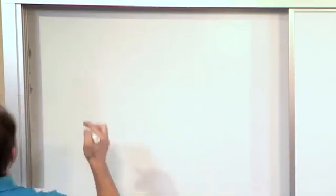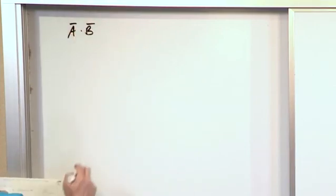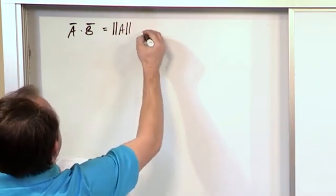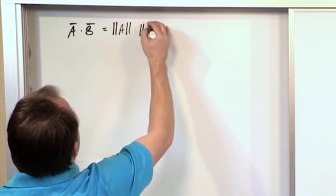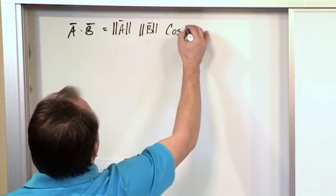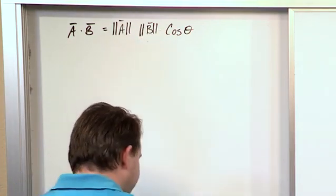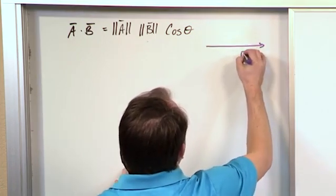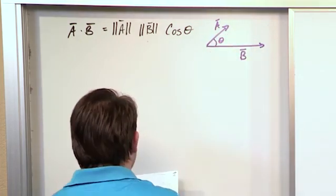The first thing I want to do is recall that the vector A when we dot it into the vector B, you can write it a couple of different ways, but one way to write it is the magnitude of A times the magnitude of B times the cosine of the angle between. So these are multiplications in between there. And just to give you a picture, we've done this before a couple times, but here is vector B, here is vector A, like this. And this is the angle between them.